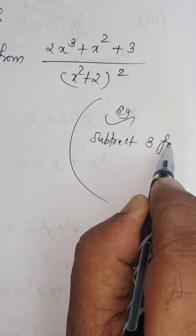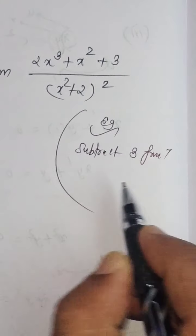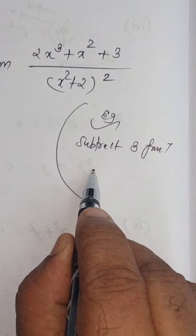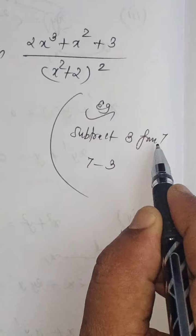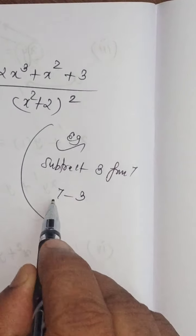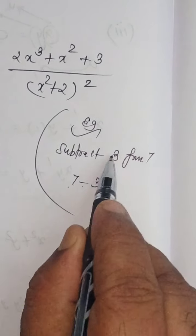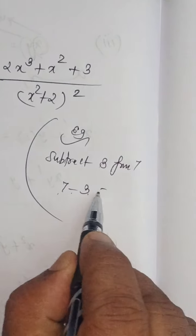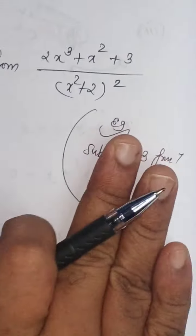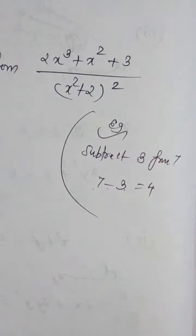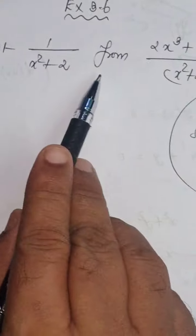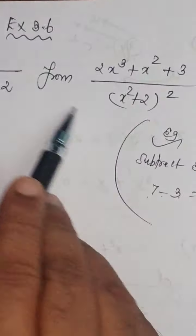Generally, for example: subtract 3 from 7 — how will you write it? Subtract 3 from 7 means 7 minus 3. 'From 7' means I have to write 7 first, then the subtract symbol minus, then 3. 7 minus 3 equals 4. This example is just for your reference.